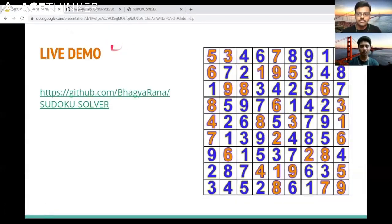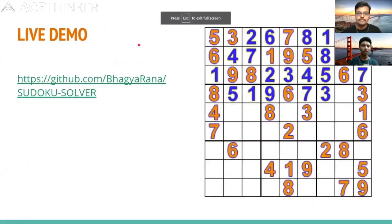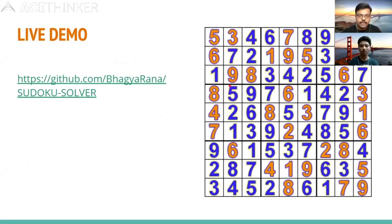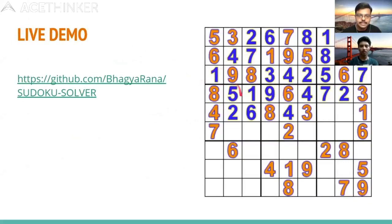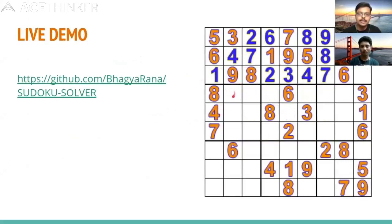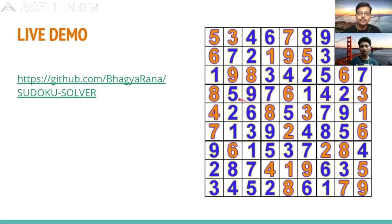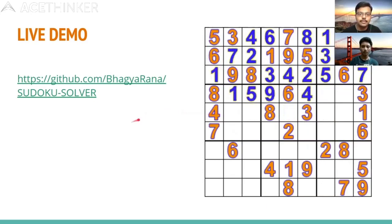This GIF animates the backtracking approach. The element at each cell is tried as 1, 2, 3, 4 and so on. At one point the algorithm cannot fill the Sudoku completely, so it backtracks and tries the next value. When the correct value — say 5 — is found, it fills the whole Sudoku completely. This illustrates the exhaustive search performed by backtracking.